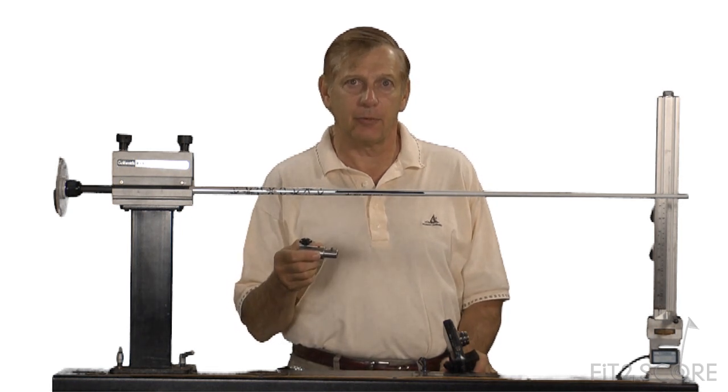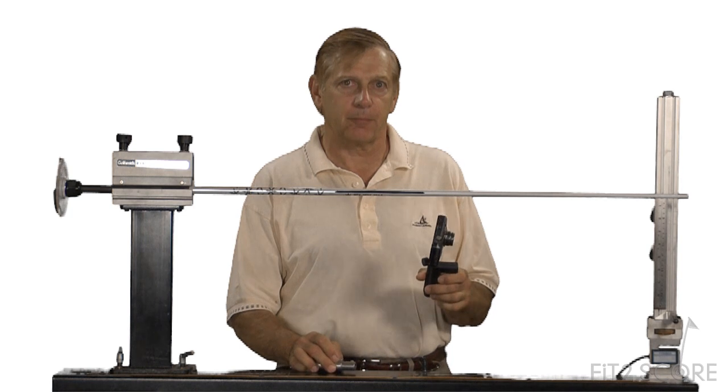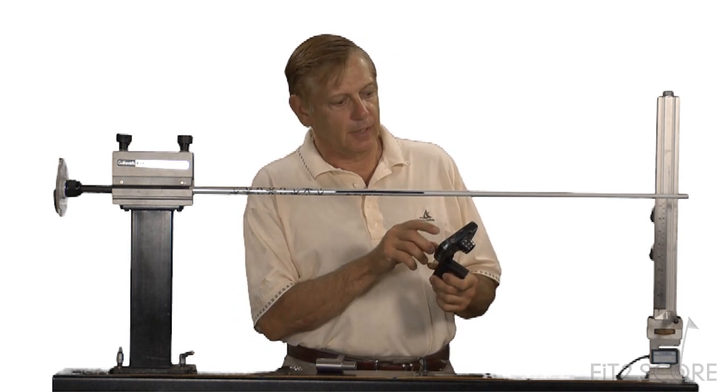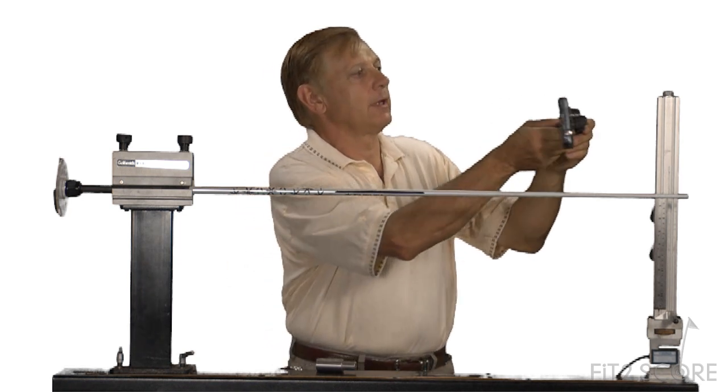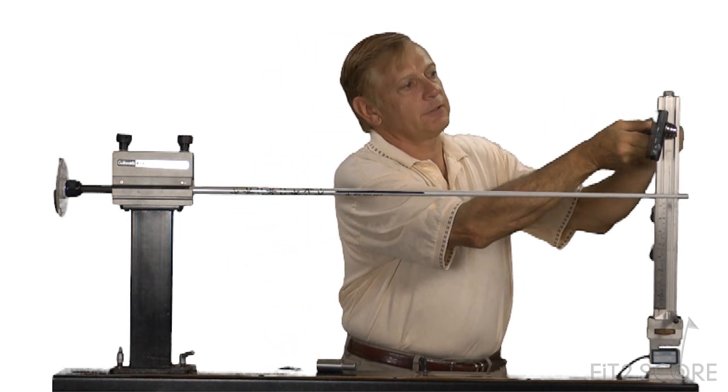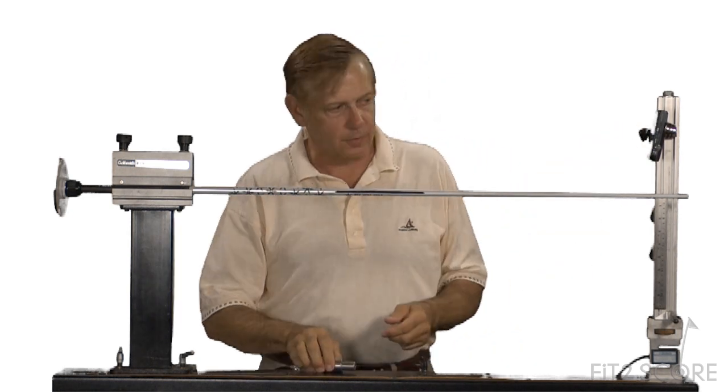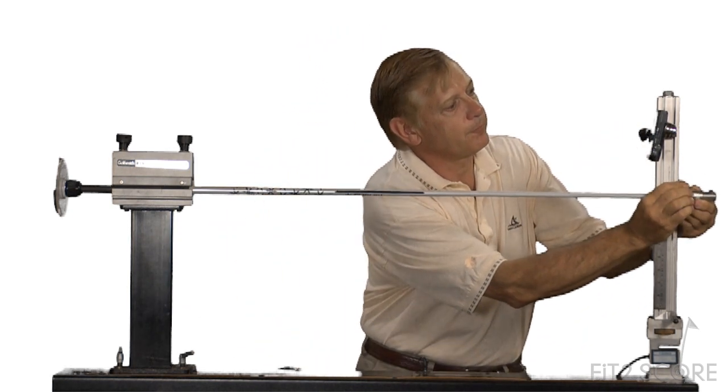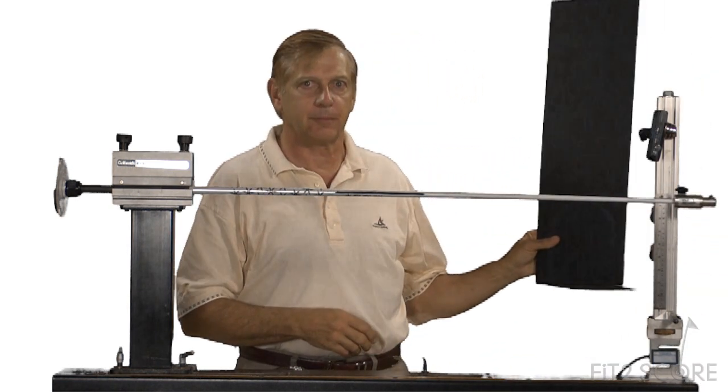I'm going to set my camera to a 2 second shutter delay, a 5 second exposure and I'm going to clamp it to the arm of my deflection device. The laser tip pointer goes on the tip of the shaft and it's pointing at a board like this one.